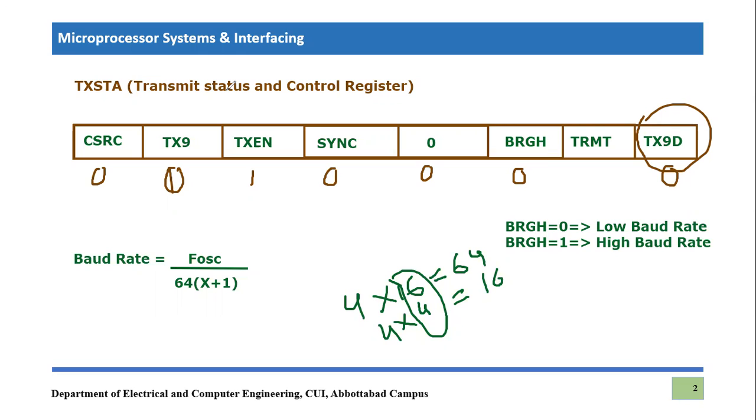So that is why I have mentioned here, if you consider BRGH is equal to one, then we will be dealing with high baud rate transmissions. And if BRGH is equal to zero, that means we are going to deal with low baud rate transmission. But in our course, when we are dealing with asynchronous serial communication, we will be dealing always with low baud rate. So that is why we will put zero in BRGH.